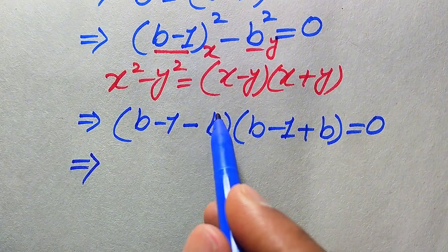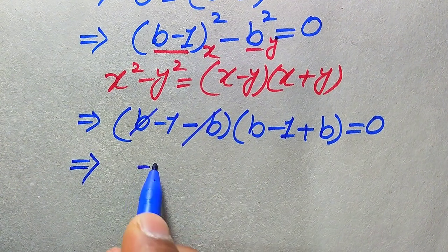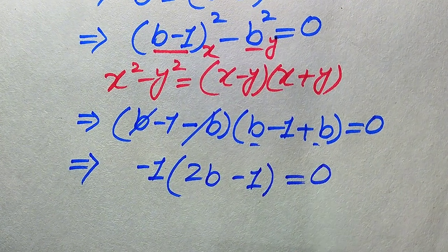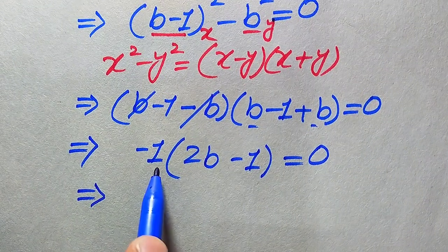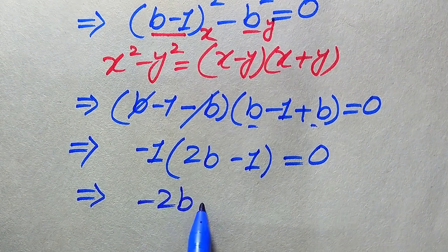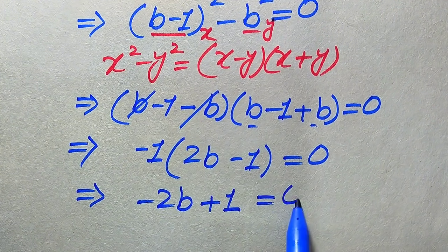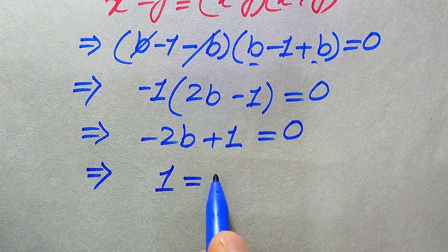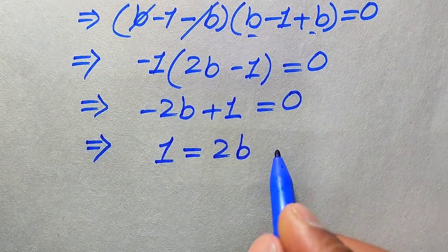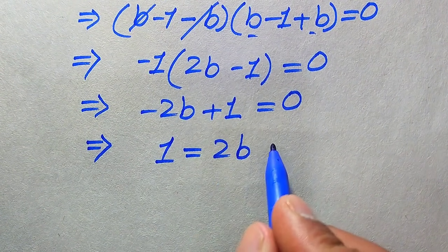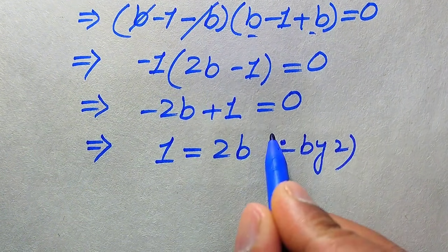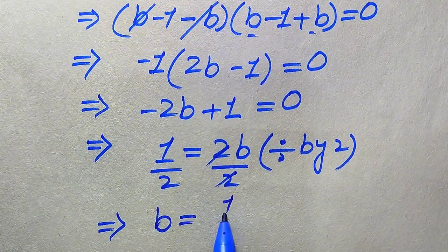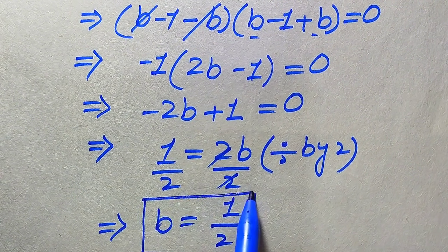The minus b and plus b cancel, giving minus 1 times (2b minus 1) equals zero. Multiplying out: minus 2b plus 1 equals zero. Moving minus 2b to the right gives 1 equals 2b. Dividing both sides by 2, we obtain b equals 1 over 2. This is the value of b from the first method.